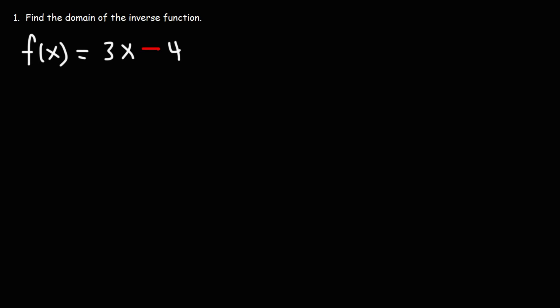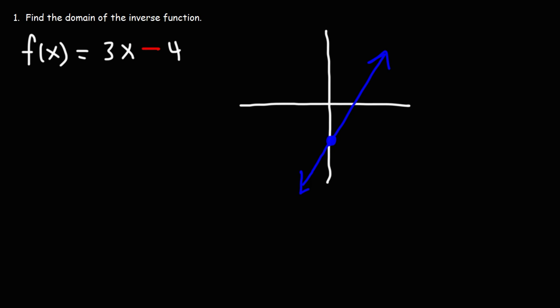In this video, we're going to talk about how to find the domain of an inverse function. So we have the regular function 3x minus 4. If we were to draw a rough sketch of the graph of this function, it would look something like this. It has a y-intercept of negative 4 and a slope of positive 3. So this is a generic shape of that graph.